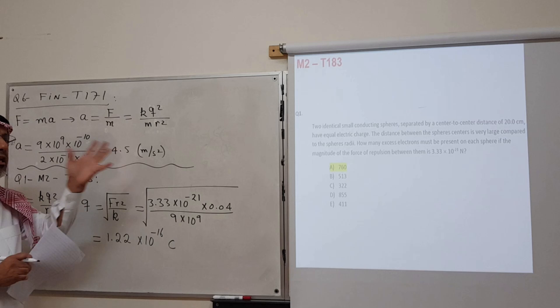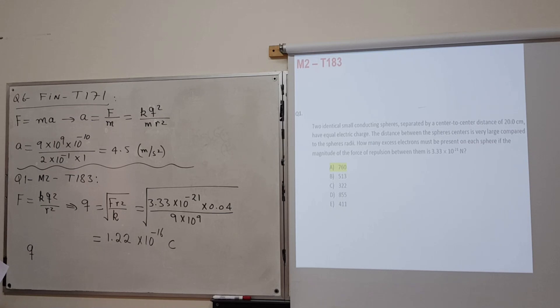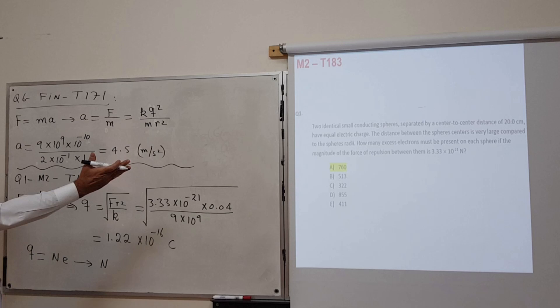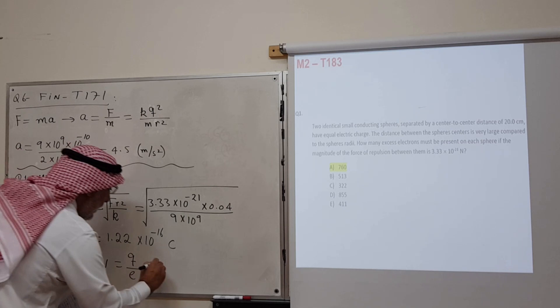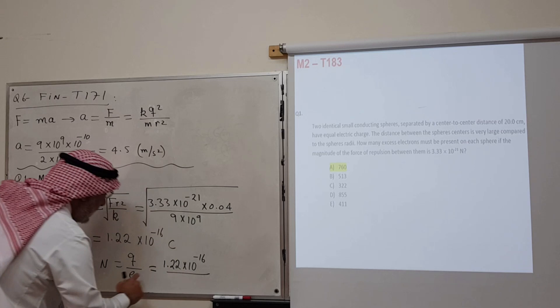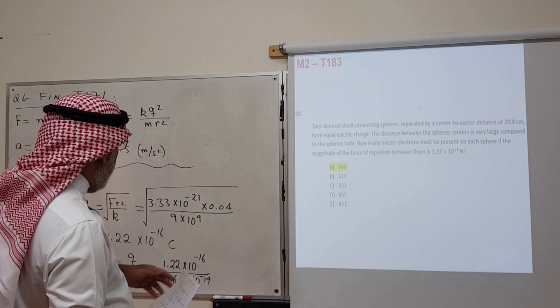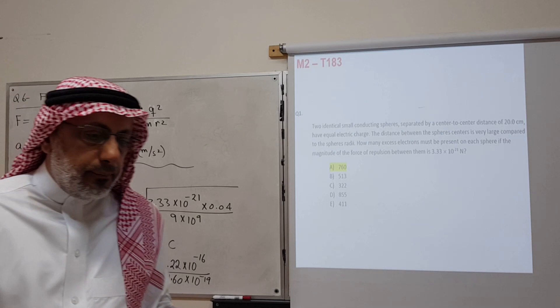Substituting F equals 3.33 times 10 to the minus 21, r equals 0.2 meters, and k equals 9 times 10 to the 9, gives Q equals 1.22 times 10 to the minus 16 coulombs. To find the number of excess electrons, apply charge quantization: Q equals n times e, so n equals Q divided by the electron charge. That gives n equals 1.22 times 10 to the minus 16 divided by 1.60 times 10 to the minus 19, which equals approximately 760 electrons.